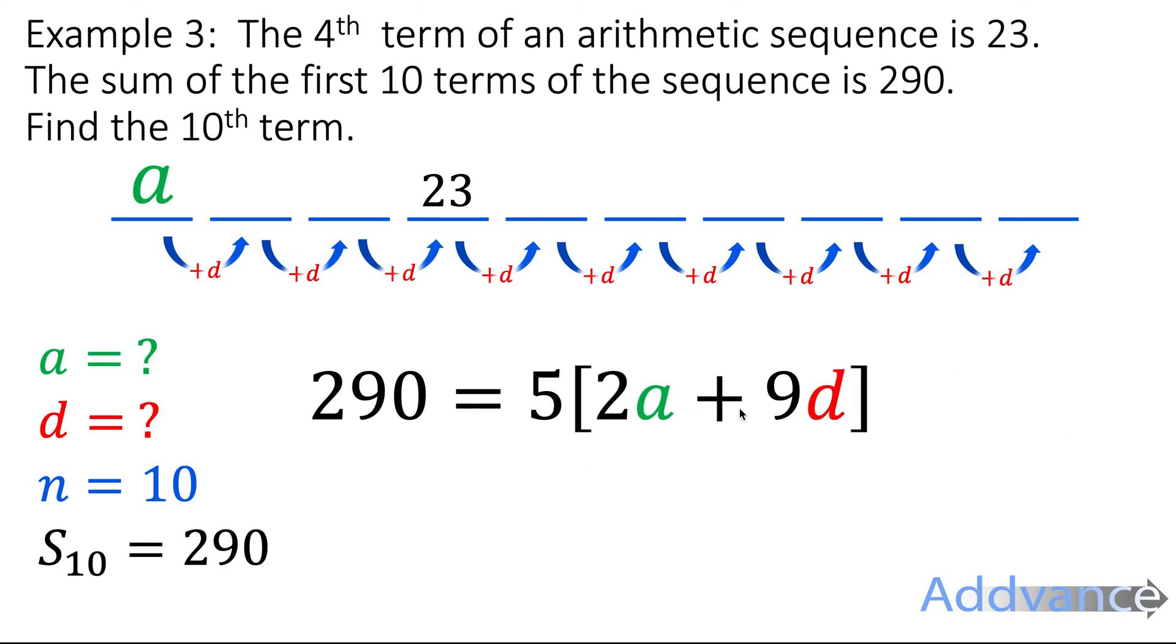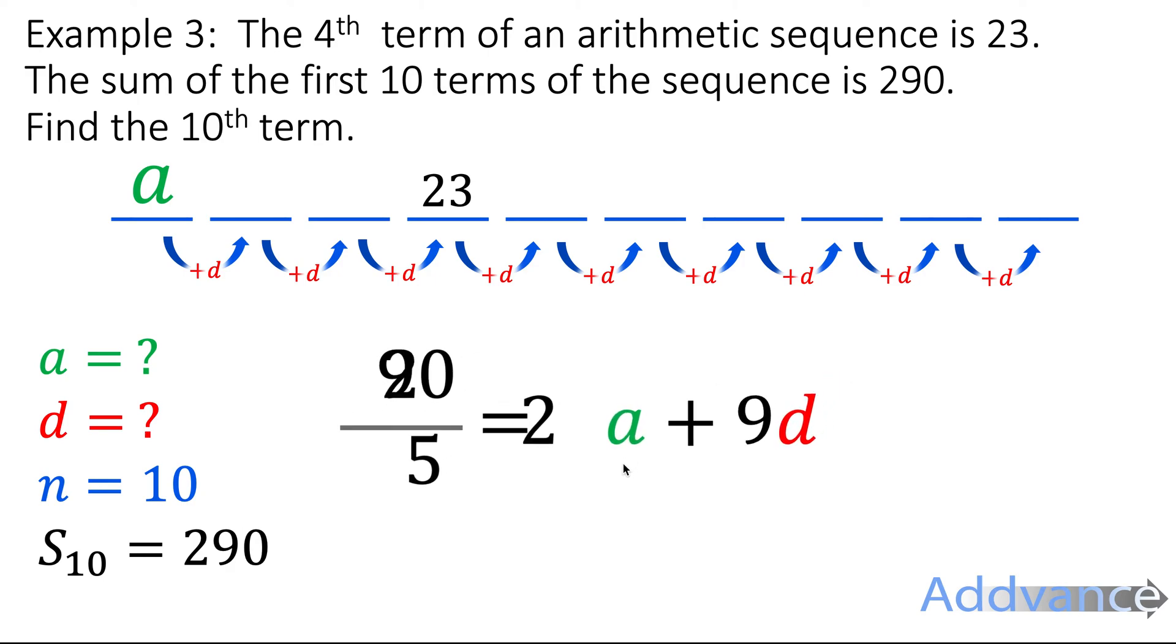Now I've got 5 times everything on this side, so I think I'll divide by 5. And then, 290 divided by 5 is 58. And so I get this equation over here. Now that's going to be useful, although I can't solve it yet because there are two unknown numbers.